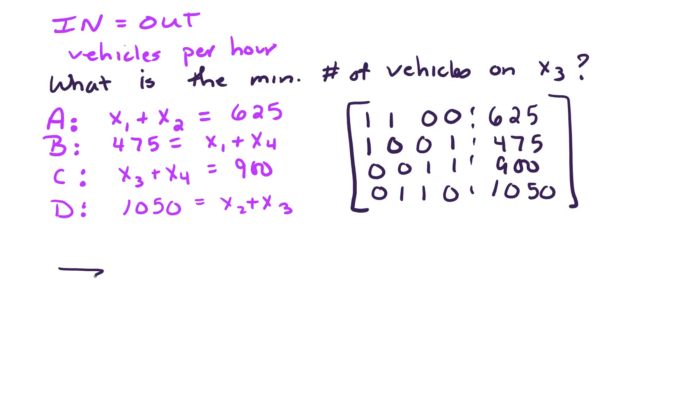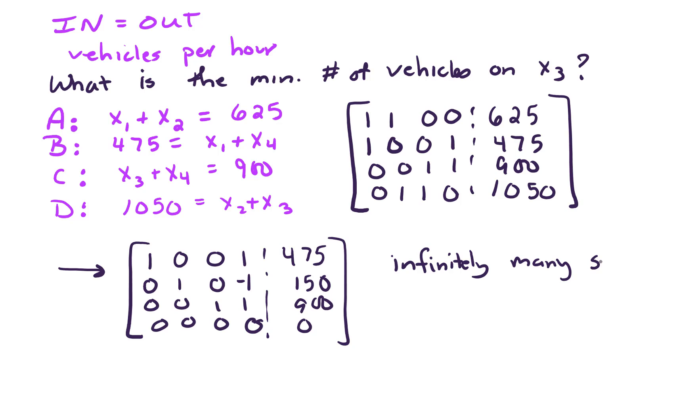Once we put this in reduced row echelon form, we get a matrix that looks like the following: 1 0 0 1 475, 0 1 0 negative 1 150, 0 0 1 1 900, and last row all zeros. And so what we find is we get infinitely many solutions. And that's a good thing in this scenario, because if there was only a unique solution, we'd have to regulate traffic very tightly in order to make this city flow well.